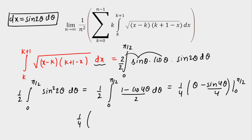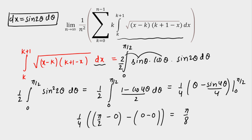Substituting the limits: at the upper limit θ = π/2, we get π/2 minus sin(2π)/4 = π/2 − 0. At the lower limit θ = 0, we get 0 − 0 = 0. So the integral equals (1/4)·(π/2) = π/8. We have successfully evaluated the definite integral and obtained the value π/8.